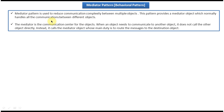The second explanation: the mediator is the communication center for the objects. When an object needs to communicate to another object, it does not call the other object directly. Instead, it calls the mediator object whose main duty is to route the messages to the destination object.